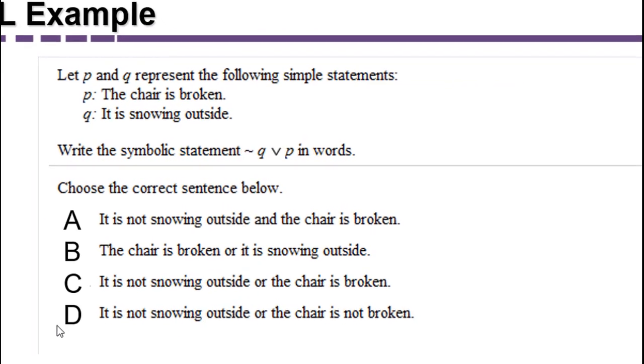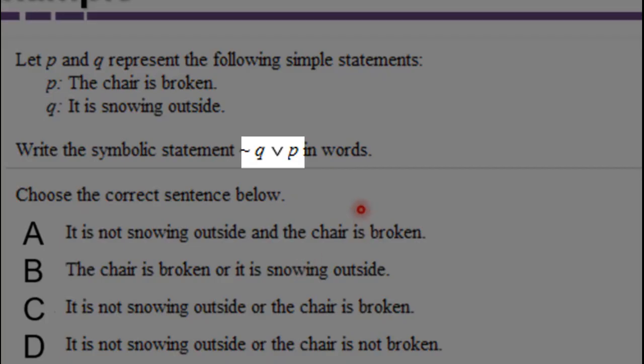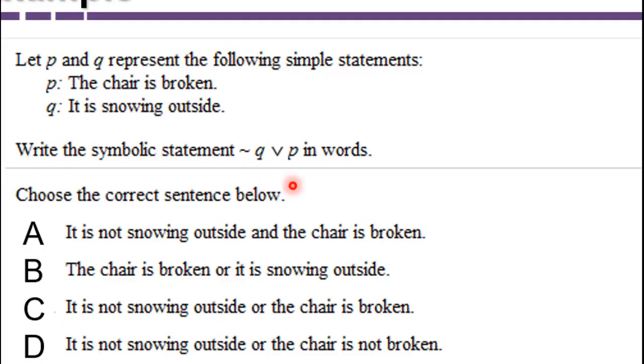This is an example directly out of our MyMathLab homework for MGF 1106 class that this is a lecture for. Let P and Q represent the following simple statements. P, the chair is broken. Q, it is snowing outside. We want to write the symbolic statement for, and we have NOT, NOT Q, OR P. NOT Q, this is the negation, the tilde, and then the right side V, this is the OR. So NOT Q or P. Q is it snowing outside. So NOT Q would be it's not snowing outside. P is the chair is broken. So we want it is not snowing outside OR the chair is broken, which is C.